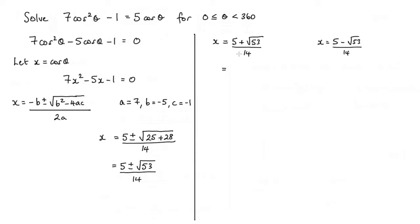Now actually evaluating these as a decimal, the first answer will be 0.877, and for this one, we'd have x is equal to negative 0.163. Now these two x values, well, we've substituted in for x, so x is actually cos theta. So what I've actually got here is that cos theta is equal to 0.877, and in this case, cos theta is equal to negative 0.163.